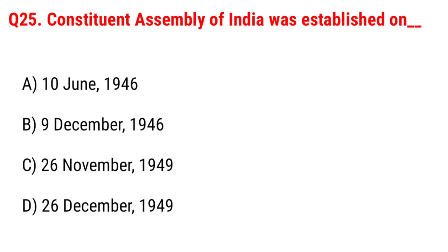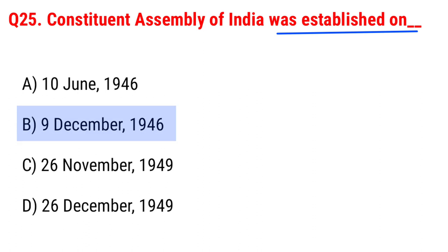Next question: the Constituent Assembly of India was established on Option A, 10 June 1946; B, 9 December 1946; C, 26 November 1949; D, 26 December 1949. The right answer is Option B, 9 December 1946.